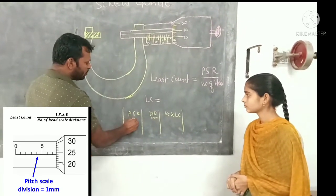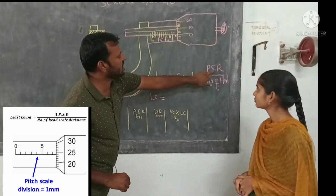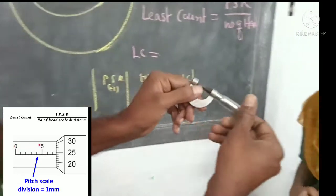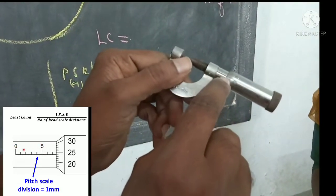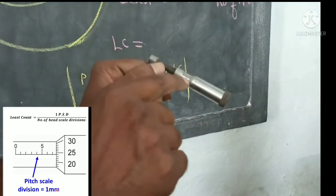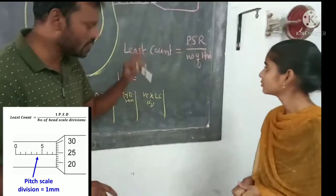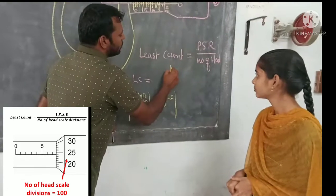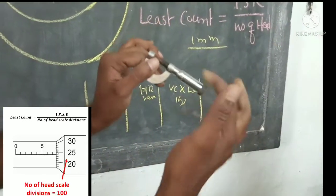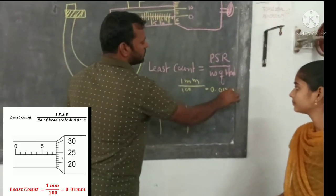The least count is calculated as: pitch scale reading divided by number of head scale divisions. On the pitch scale, each division is 1 millimeter. The total number of head scale divisions is 100. So least count equals 1 mm divided by 100, which equals 0.01 mm. This is the least count of the screw gauge.